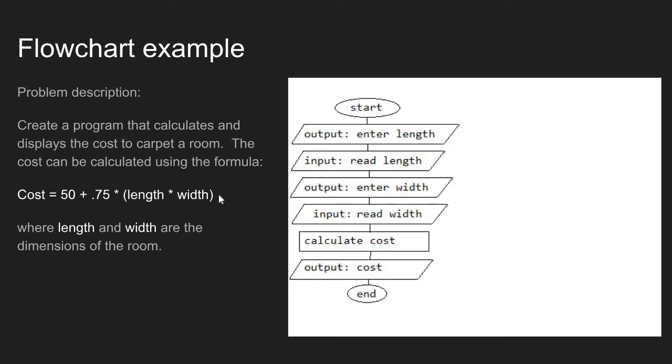Before we can calculate the cost, we need to get the length and width values from the user. And the way we get data from the user is by creating a prompt. A prompt has an output component where we tell the user what to enter and an input component where we actually read in the user value. So let's see how this might look in a flowchart.